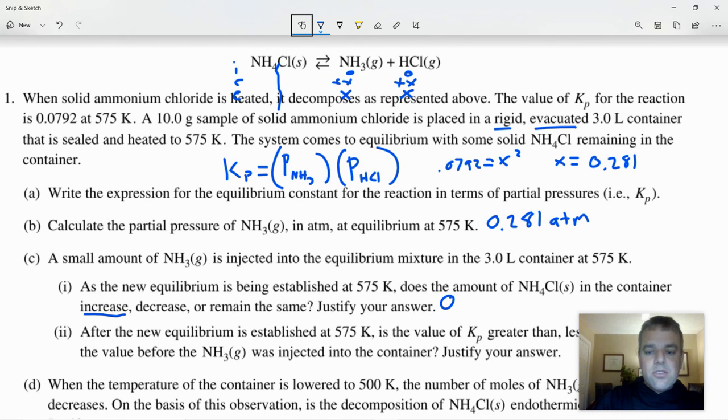So we could say that Q is greater than K, so it would shift left. Or you could say that increasing the concentration of ammonia increased the rate of the reverse reaction, so the amount of ammonium chloride would increase.